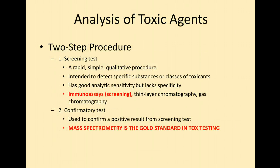So how do we analyze these toxic agents? There's usually a two-step procedure. The first one is a screening test — we just want to see if there are any toxic elements present. It's usually rapid, simple, and qualitative, meaning it gives you a positive or negative result. It's intended to detect specific substances or classes of toxicants. It may tell you that someone is positive for opiates, but it won't tell you specifically that the opiate is morphine. It has good analytic sensitivity, but it's not specific.